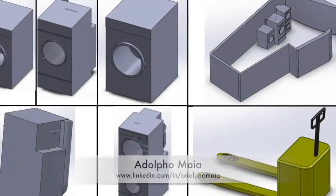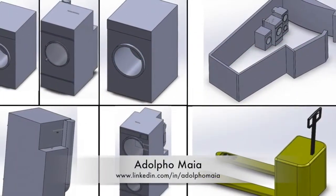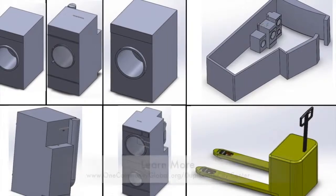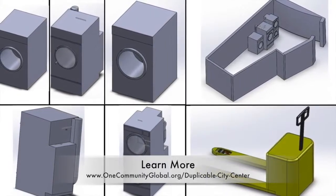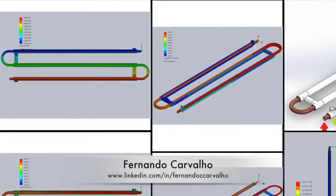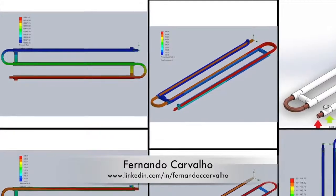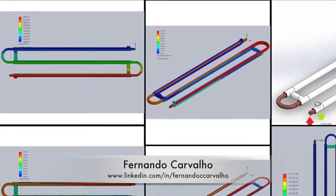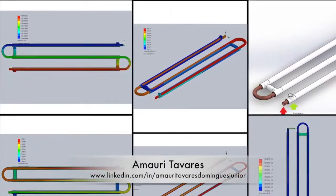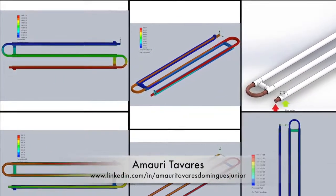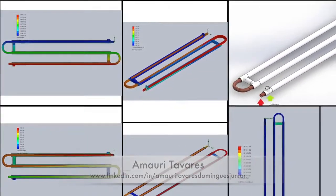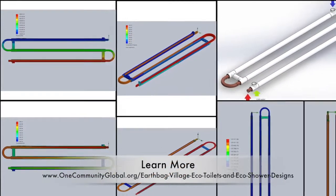Adolfo Maya, mechanical engineering student, and George Antonio Ricardo, also a mechanical engineering student, continued evolving the vermiculture bathroom designs with a completely new design that eliminates the need for removable trays. Adolfo also modeled several additional components for demonstrating the duplicable city center laundry heat recovery systems.